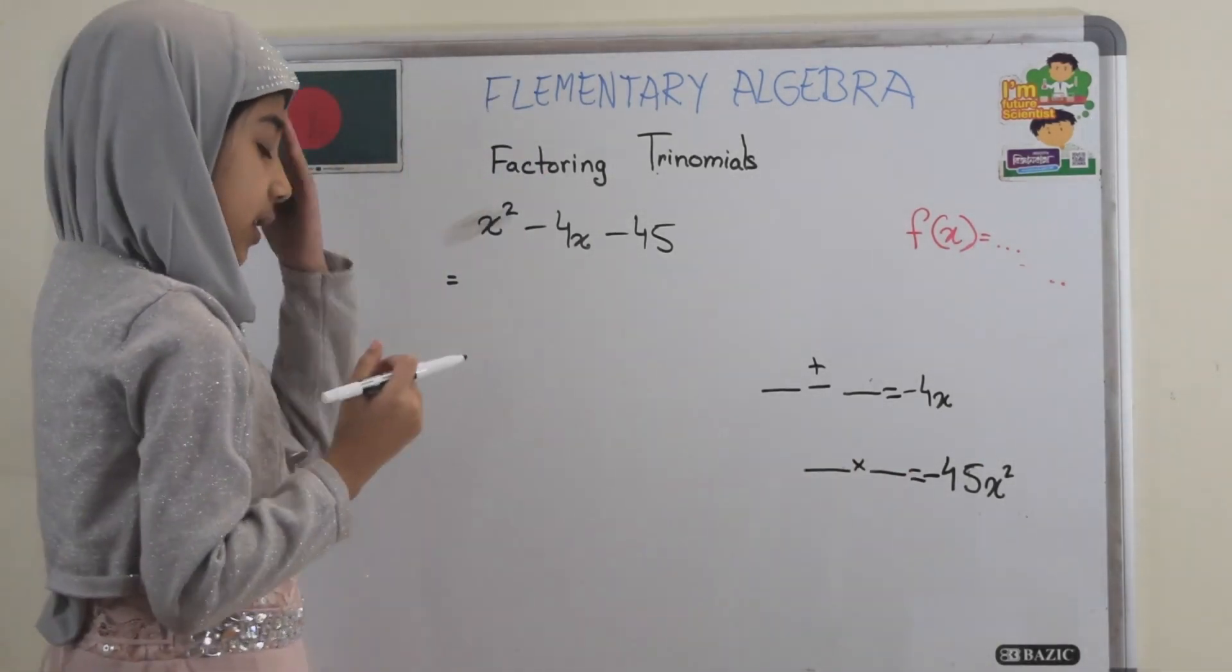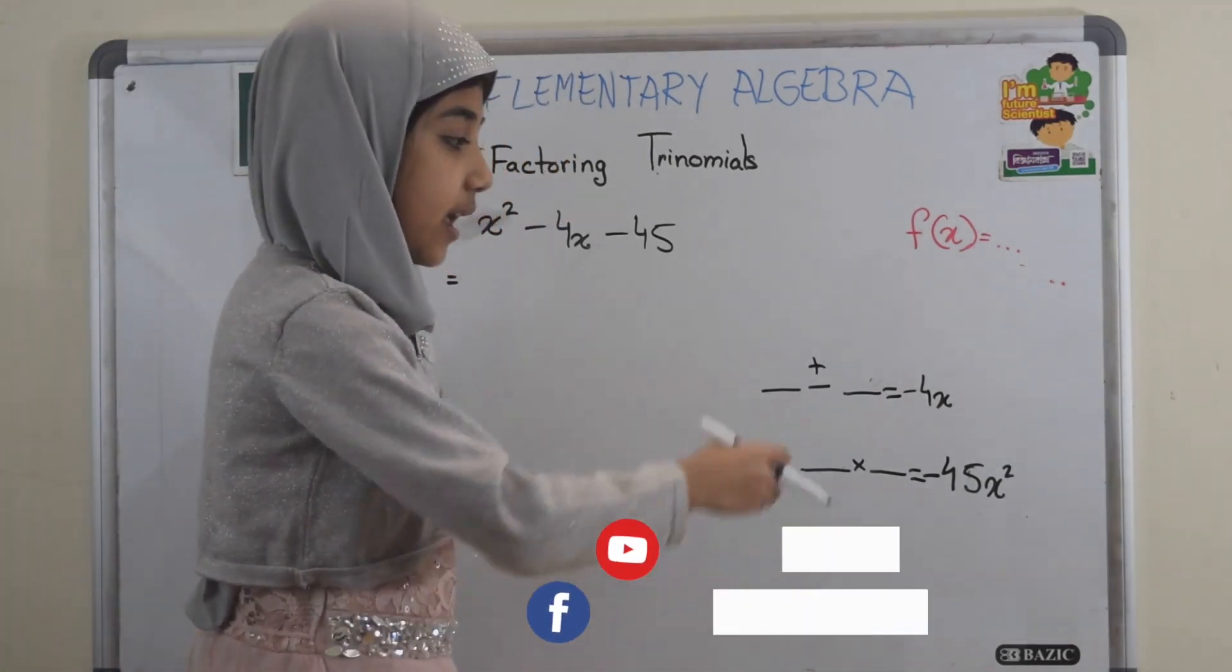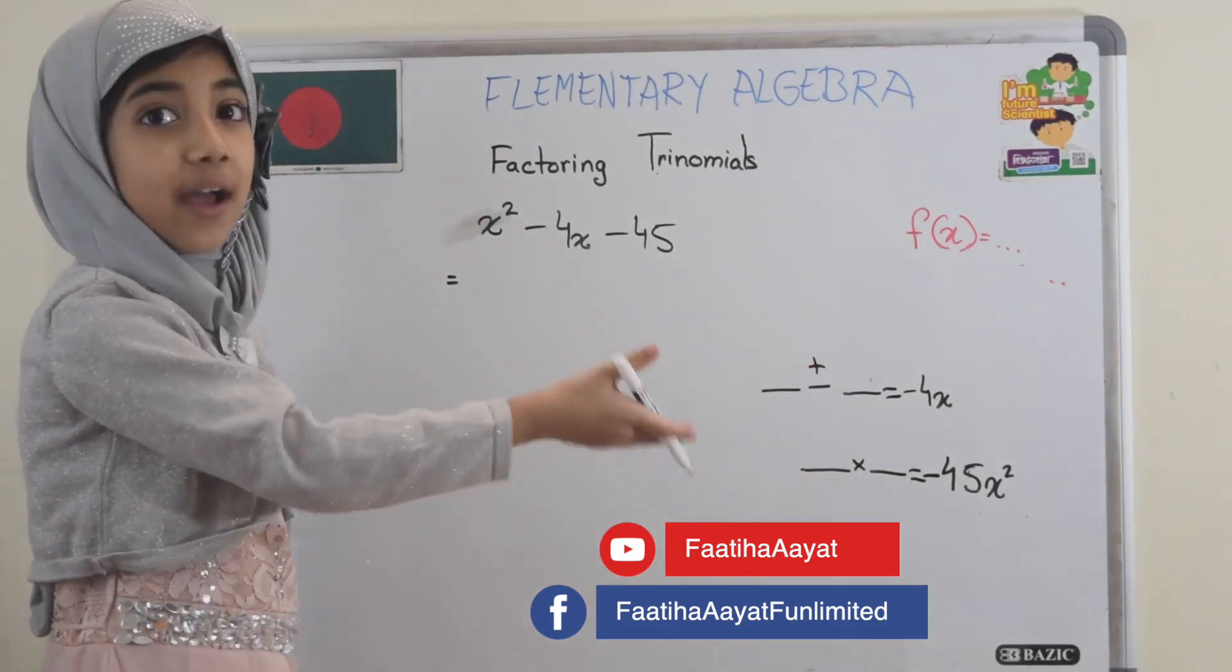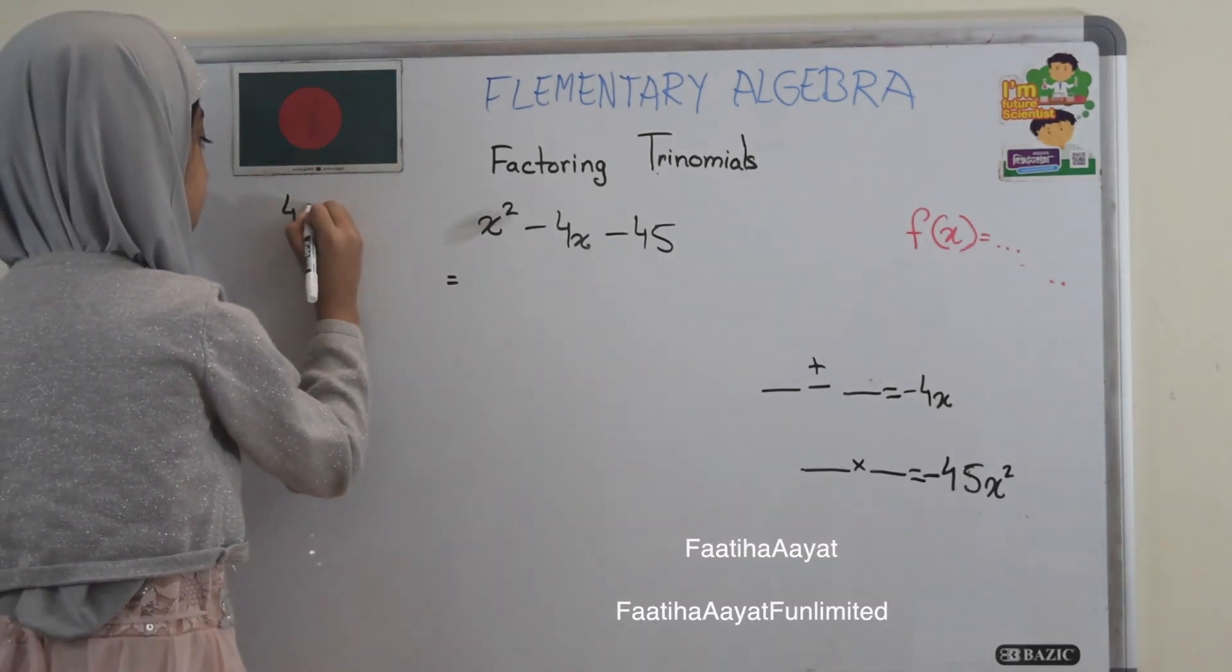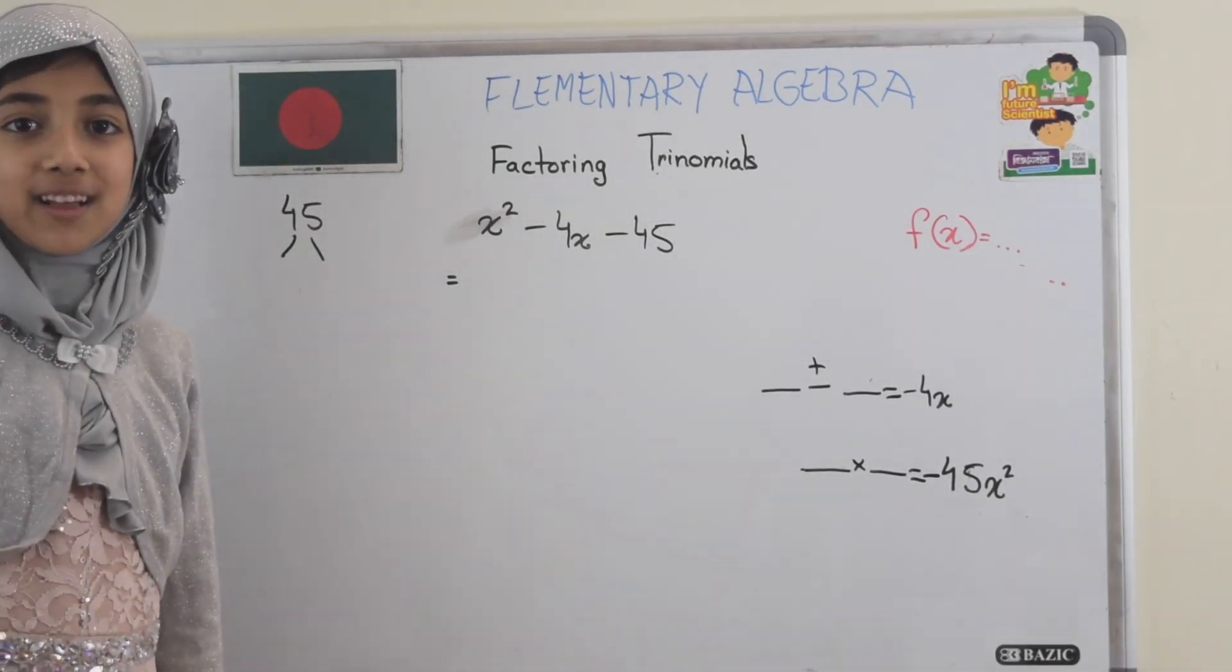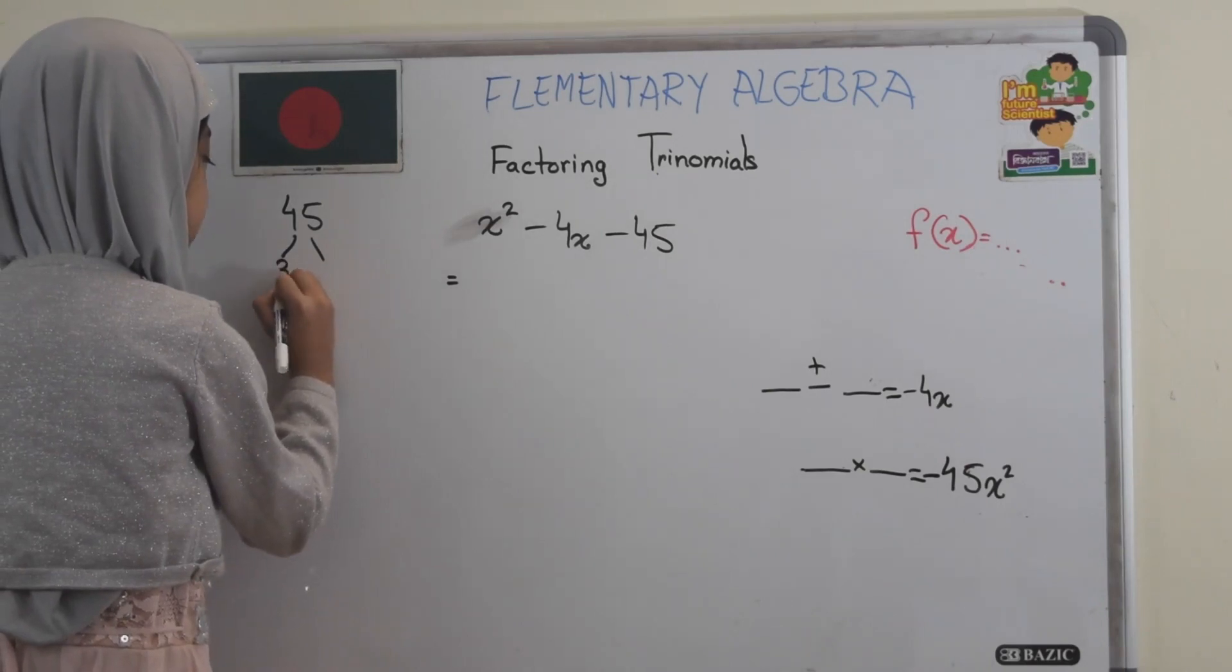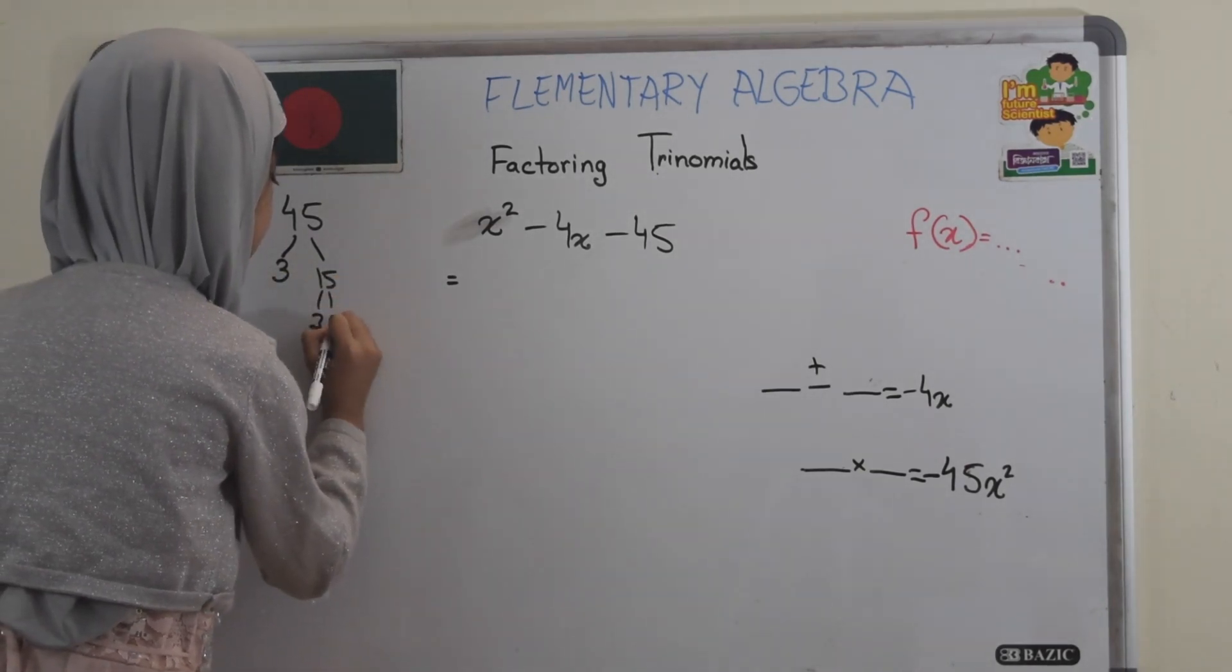So in order to find the two numbers, you've got to find them in 45 factors. So I am going to find 45 factors in the prime factorization method I showed you in the other video. So it goes with 3, 15 times, and 15 goes with 3, 5 times.